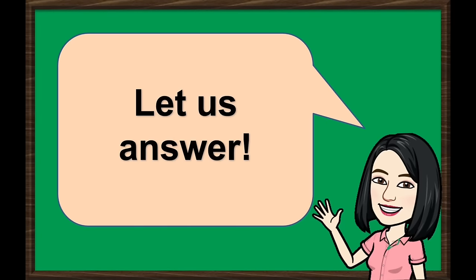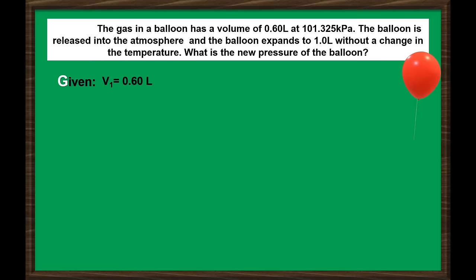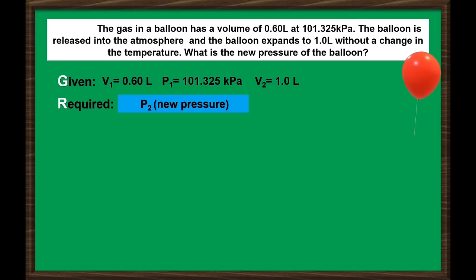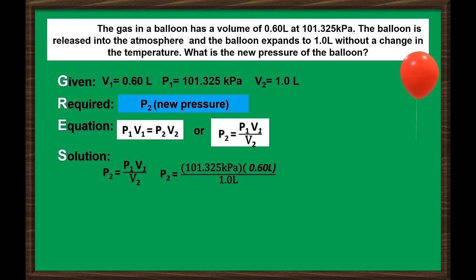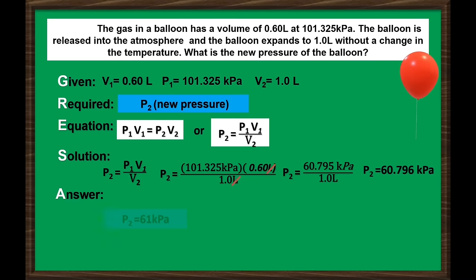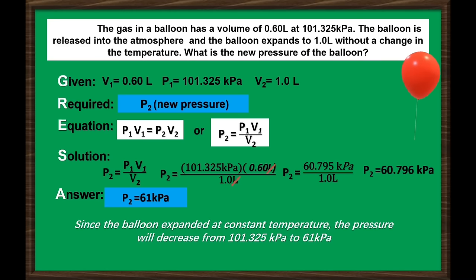Let us answer. The given values are: initial volume = 0.60 liters, initial pressure = 101.325 kilopascal, and final volume = 1.0 liters. We are looking for the final pressure. We will use Boyle's Law equation since the temperature and amount of gas are constant. Using the derived equation — final pressure equals initial pressure times initial volume over final volume — and substituting the values while canceling the unit for volume, our final pressure is equal to 60.796 kilopascal, or approximately 61 kilopascal. Since the balloon expanded at constant temperature, the pressure decreased from 101.325 kPa to 61 kPa.